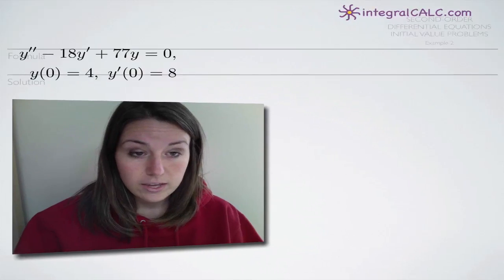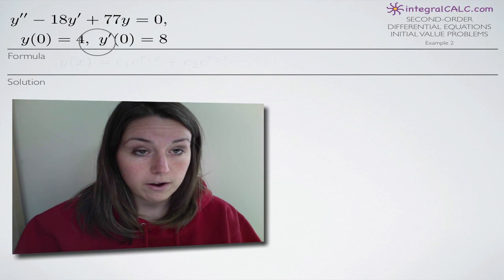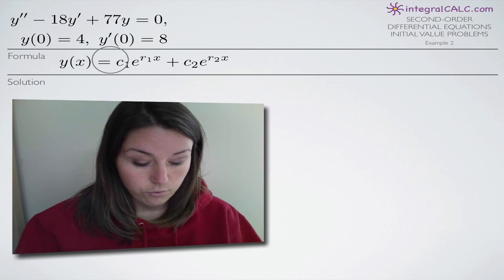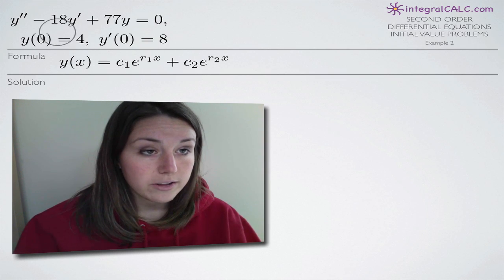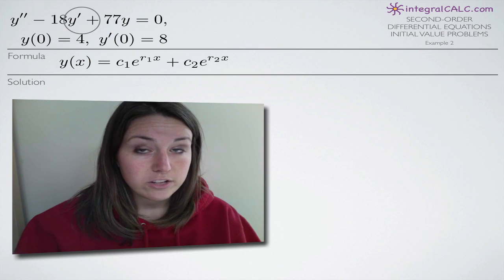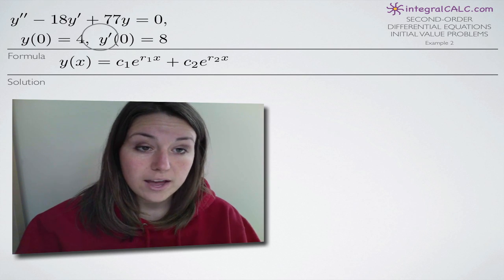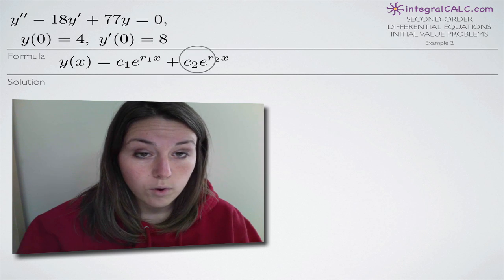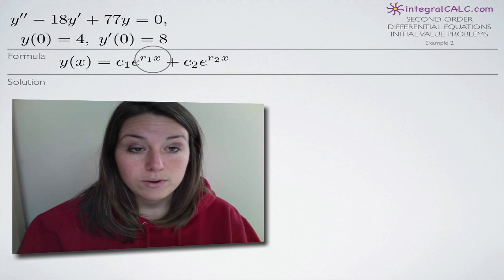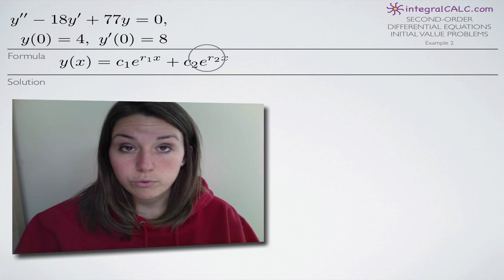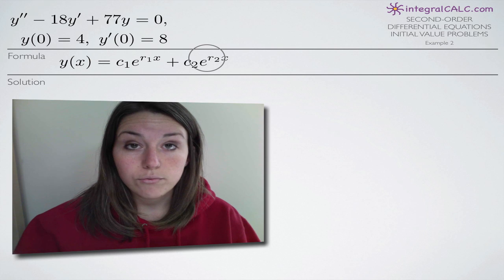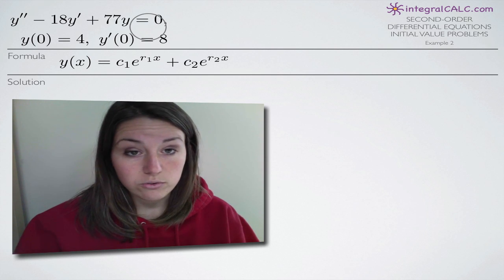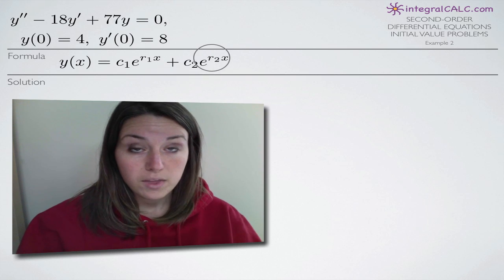We're going to be using each of these pieces of information a little bit later on. But here's the formula that we're going to need. The first thing we want to do is convert our original equation to one that involves r's instead of y's, because our first step is solving for r sub one and r sub two in our formula. We use r because they are the roots — the solutions to the equation — and we're going to get two solutions and plug them in for r sub one and r sub two.